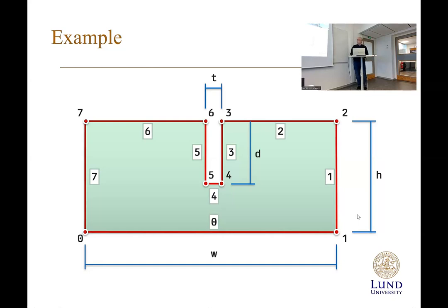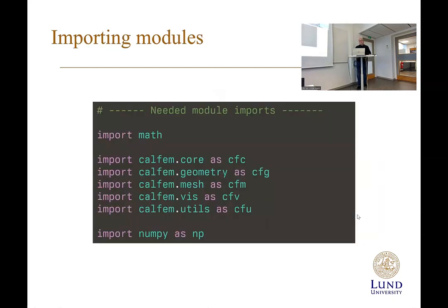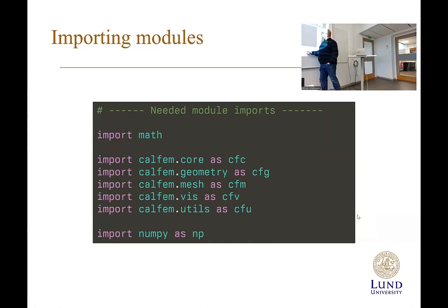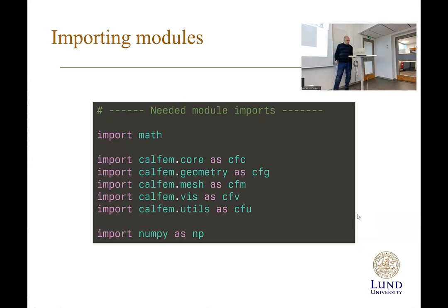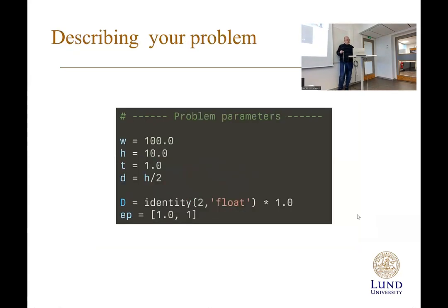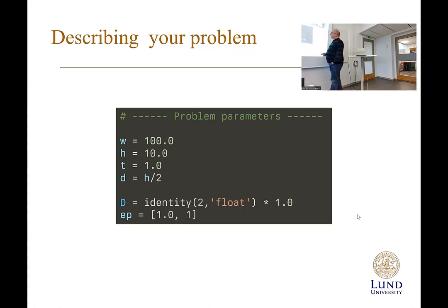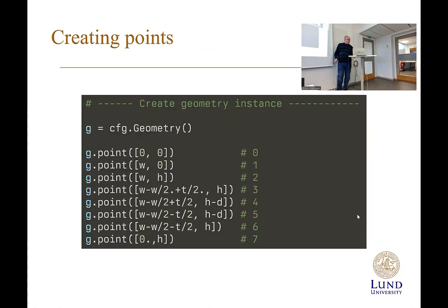To start, we load our modules in Python: calfem.core for element functions, calfem.geometry as cfg, calfem.mesh as cfm, visualization routines as cfv, and additional utilities as cfu. We also need NumPy. Then we create the model parameters: W equals 100, height equals 10, thickness equals 1, and depth equals height divided by 2. We create the identity matrix B for element properties, and now we are ready to define our geometry.